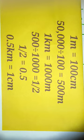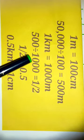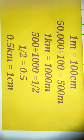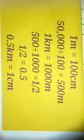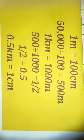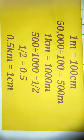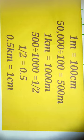The third one is the representation fraction. The ratio shown in this scale enables the reader to convert the measuring unit as per their required units — for example, in inches, centimeters, kilometers, or miles. 1 meter equals 100 cm; 50,000 divided by 100 equals 500 meters; 1 km equals 1,000 meters; 500 divided by 1,000 equals 1/2; and 1/2 equals 0.5 km, which equals 1 cm. I hope you understand the types of scales.